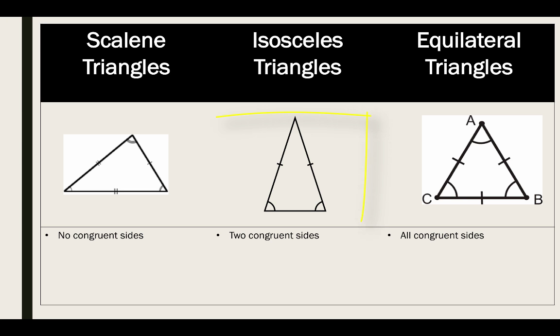We have isosceles triangles. With isosceles triangles they have two congruent sides so they'll have two sides that are the same size.